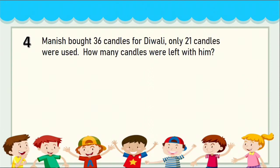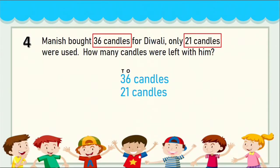Next question: Manish bought 36 candles for Diwali; only 21 candles were used — how many candles were left with him? The word 'left' means it's a subtraction sum. Write one sentence and highlight 36 candles. The word 'used' has come — that means those candles have been used, so the amount is reduced from 36 to 21. Write '21 candles.' 'Left' means minus, so put the minus sign.